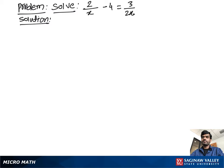Solve 2 over x minus 4 is equal to 3 over 2x. Let's write the problem again: 2 over x minus 4 is equal to 3 over 2x.